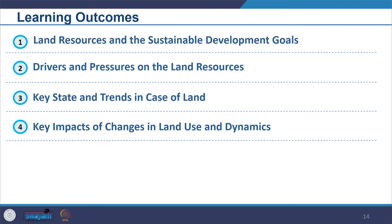The expected learning outcomes: once you go through this, you should be able to review land as a resource and compare it from the perspective of sustainable development goals. You should be able to identify different drivers and pressures on land and understand the complexity of how we use land as a resource. You should be able to list problems and trends related to land, and review and identify the impacts — what is happening with land as a resource and the various things connected with it.